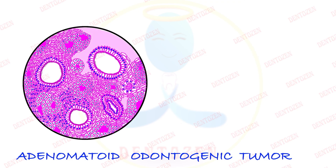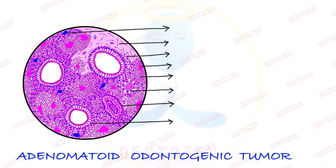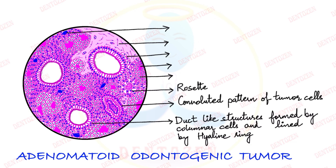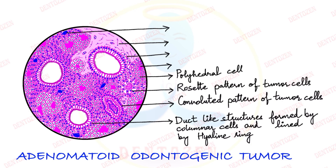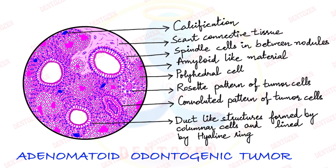In the remaining small area, we fill in connective tissue. Very little — scanty connective tissue is seen, filled with blood vessels, collagen fibers, and fibroblasts. Then we add the blue-colored calcifications. That is the Adenomatoid Odontogenic Tumor histopath. For labeling: duct-like structures formed by columnar cells lined by a hyaline pink ring; convoluted pattern; rosette pattern; polyhedral cells; amyloid-like material; spindle cells filling between nodules; scanty connective tissue; and calcifications.